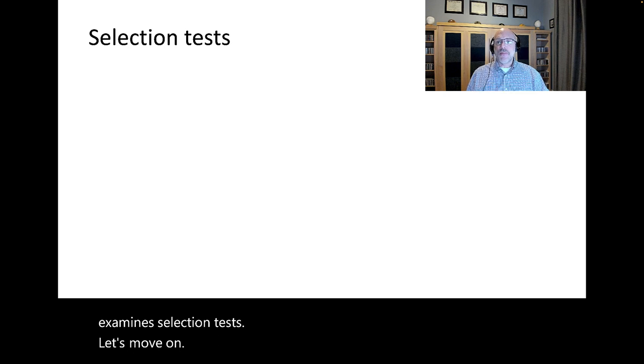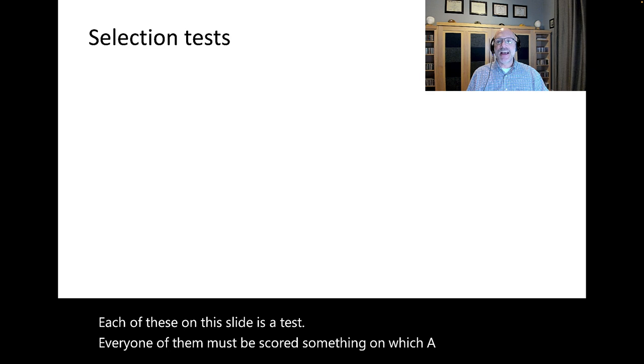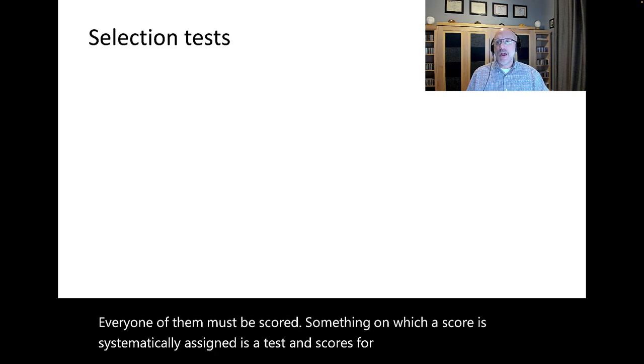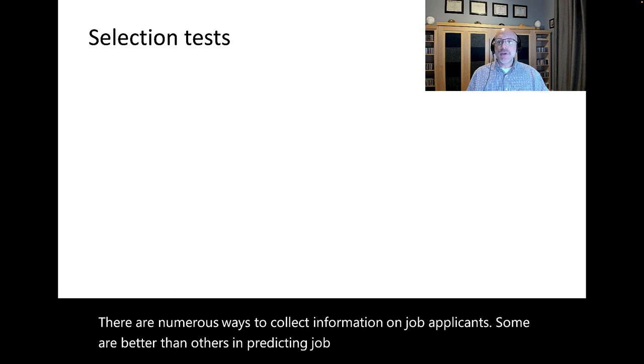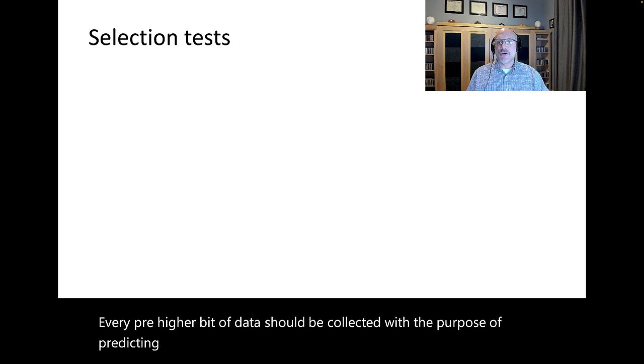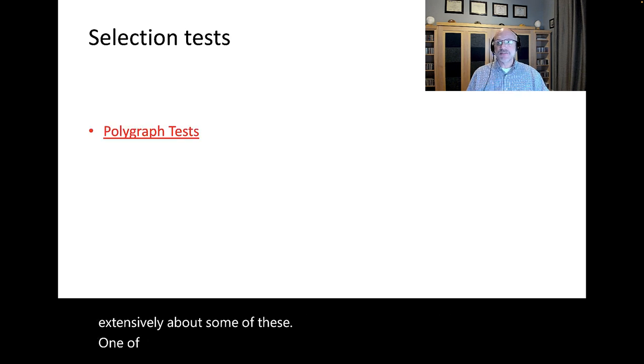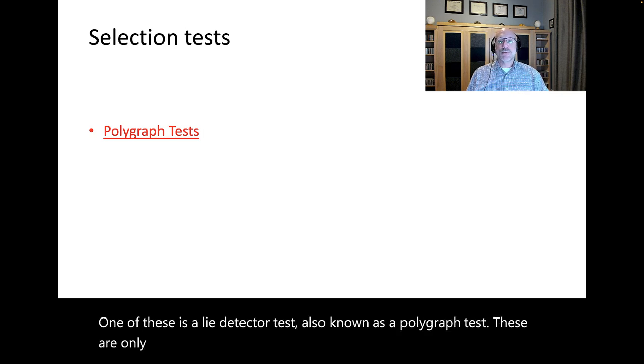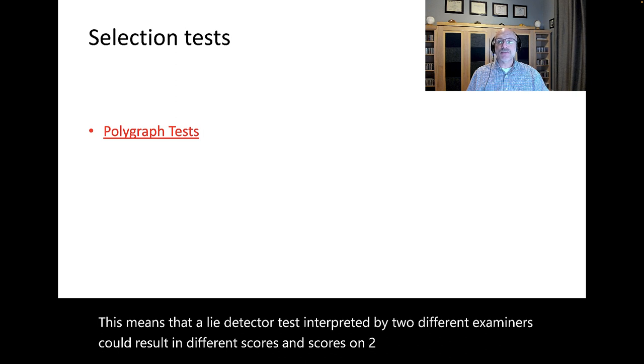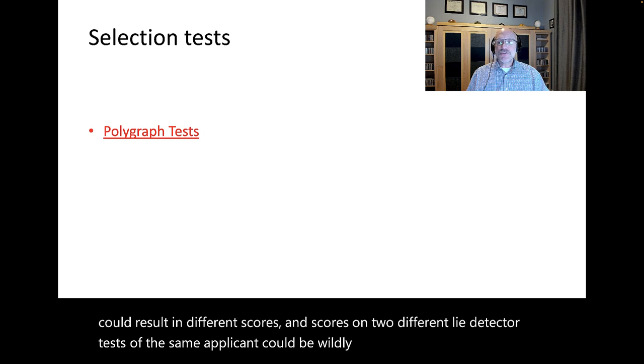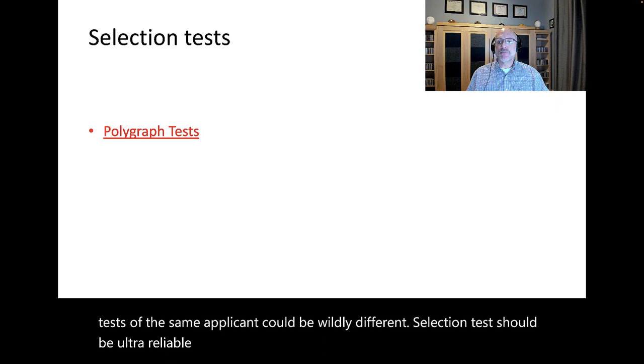Each of these on this slide is a test. Every one of them must be scored. Something on which a score is systematically assigned is a test, and scores for applicants are compared. There are numerous ways to collect information on job applicants. Some are better than others in predicting job performance. One of these is a lie detector test, also known as a polygraph test. These are only allowed for certain jobs because they are notoriously unreliable. Selection tests should be ultra-reliable. We're making important decisions based upon their scores.